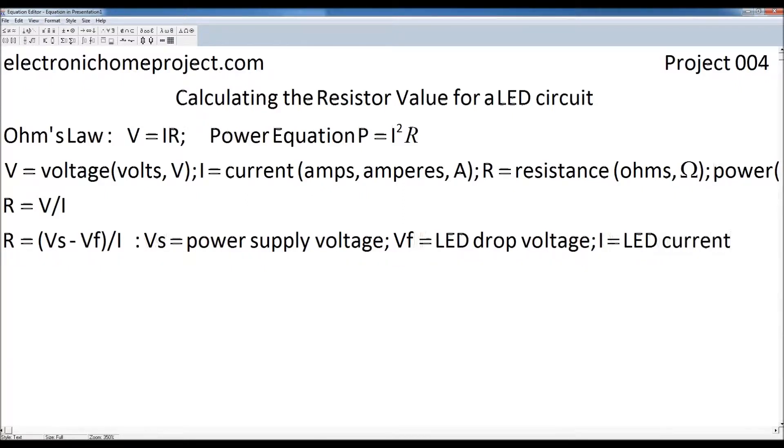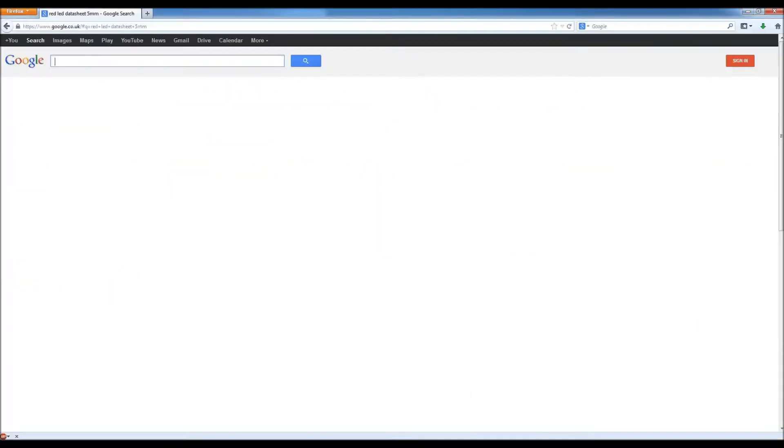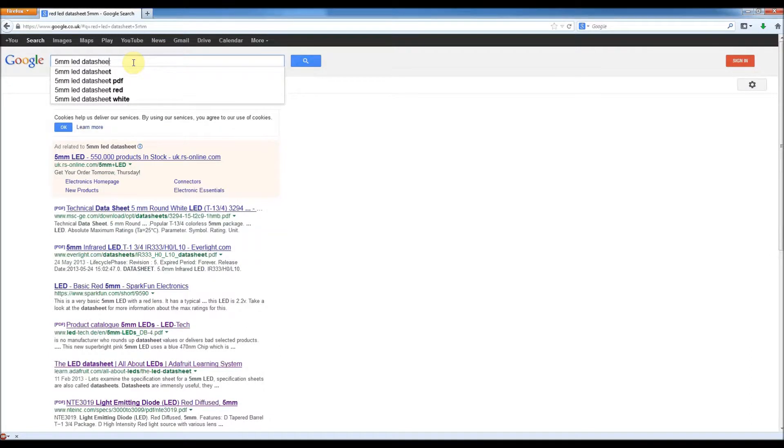Now, we need to find out what they are. Now, we know Vs because that's what our battery is, and that's 9 volts. The other values we need to find out, Vf and I, we need to find out from looking a little bit more at the LED we're using. Now, most LEDs are fairly standard in these values. But if we want to be more specific, if we know the exact model we're looking at, we can look at what's called the data sheet of an LED. So we can look at, for example, a 5 mm LED data sheet.